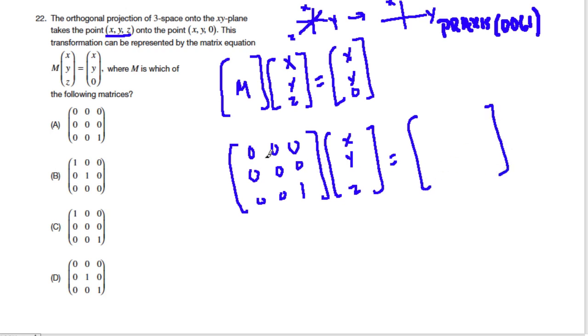So first we have this row times this column, and that gives us our first value up here, and then we have our second row times the column gives us our second value, and this third row times the column gives us our third value. So 0, 0, 0 times 0 times x, 0 times y, 0 times z, all added up is 0. But we don't want that, we want x. So this one is out.